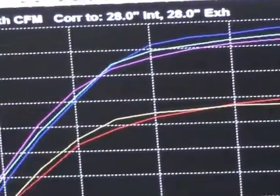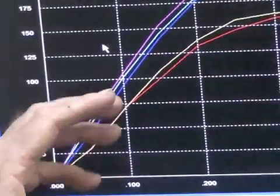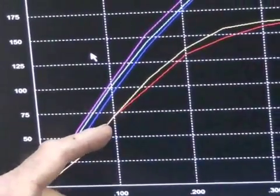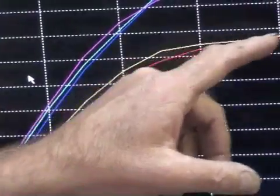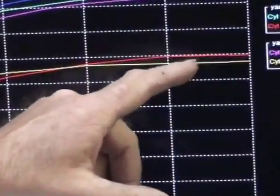On the exhaust, it's kind of strange here. It's a little weak at the first lift up out to the 300 lift, and then we're starting to enhance the airflow up here on the top.